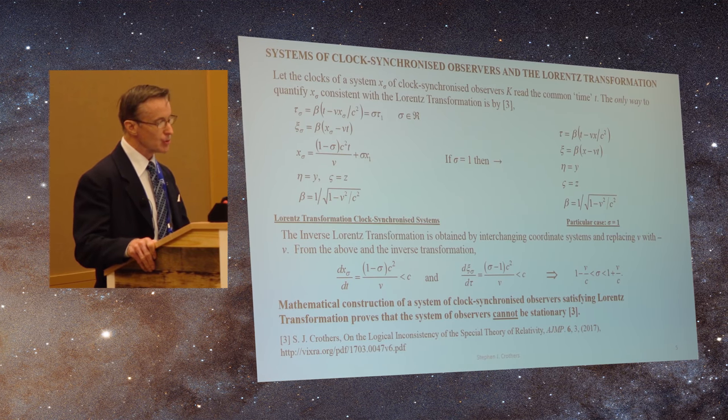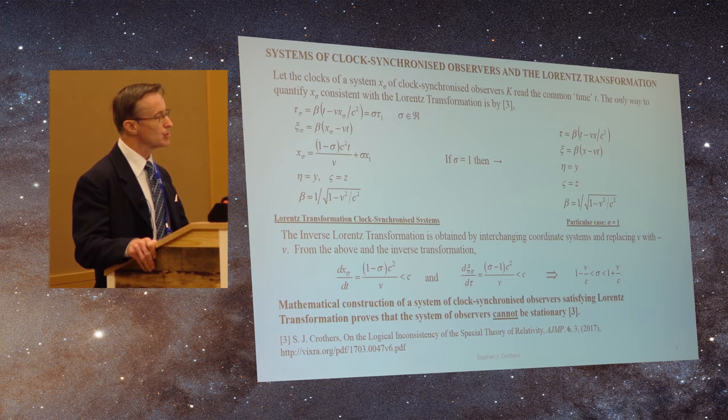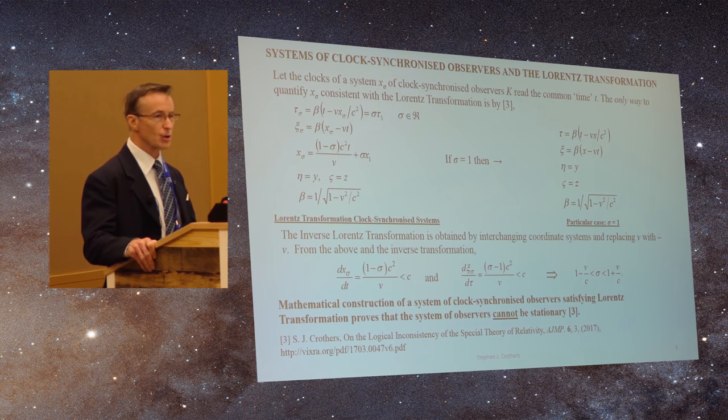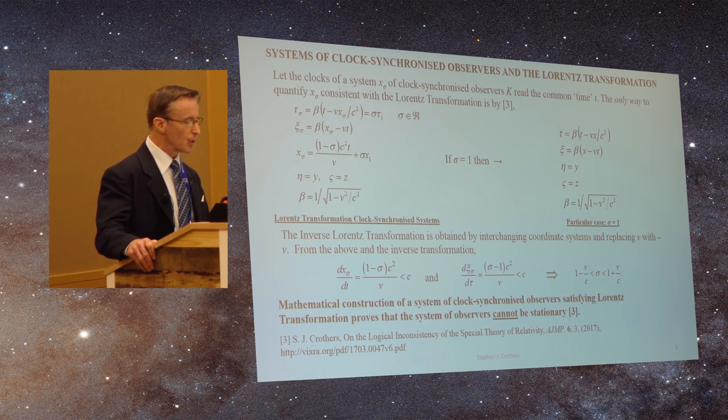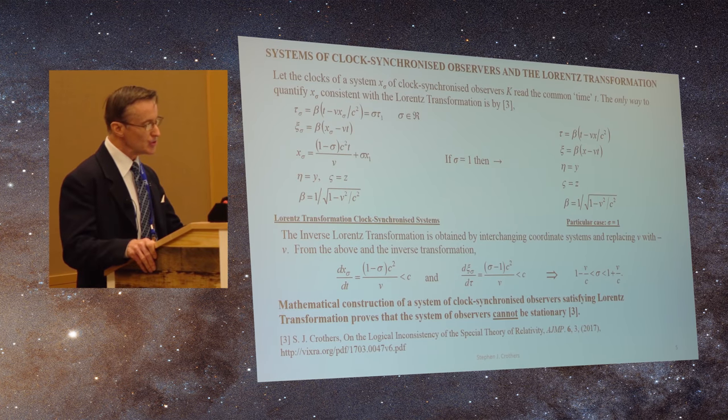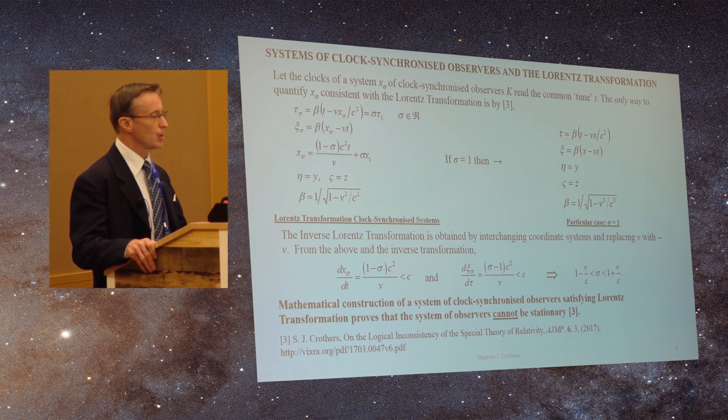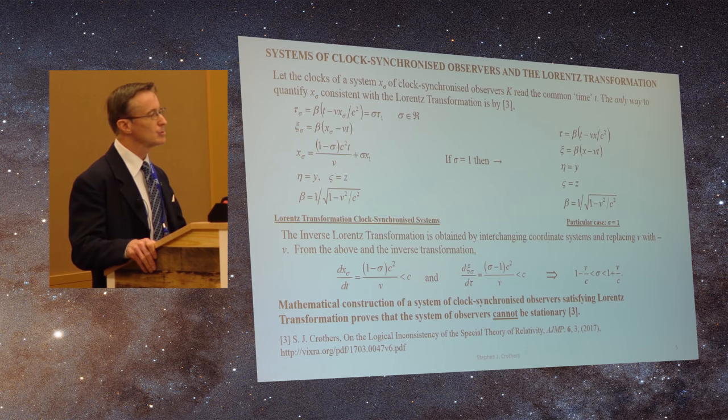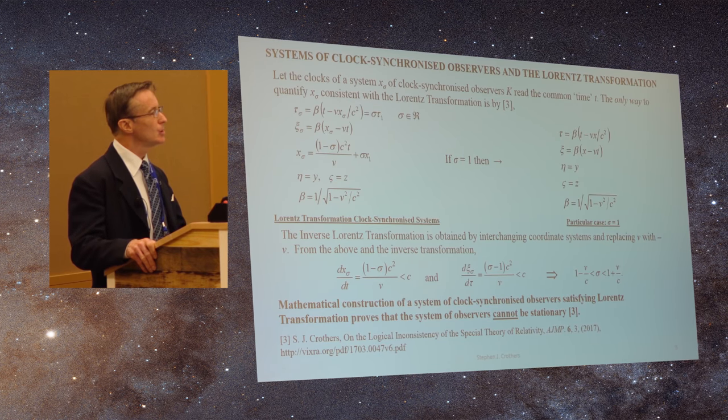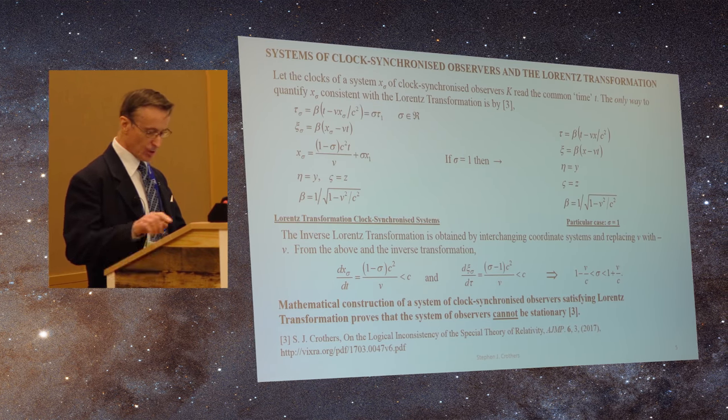Similarly, if we construct a system of clock-synchronized observers and make them conform to Lorentz transformation, we find that they can't be stationary. Again, if sigma takes the value of one, we get Einstein's privileged observer, and that's one observer, and that violates the tenet of theory.